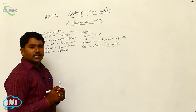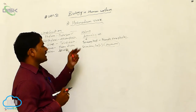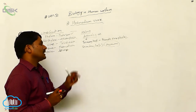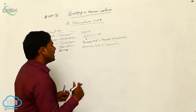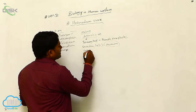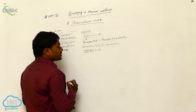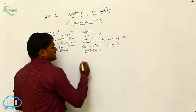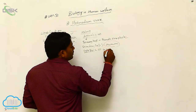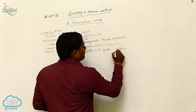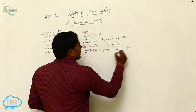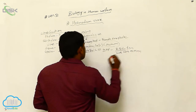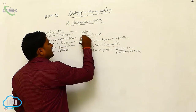If the parasite undergoes sexual development, that host is called the primary host. If the parasite undergoes an asexual life cycle, that is called the secondary host. And this is a cytozoic parasite, meaning it lives inside the host cells, especially the RBC of man as well as the liver cells of man.